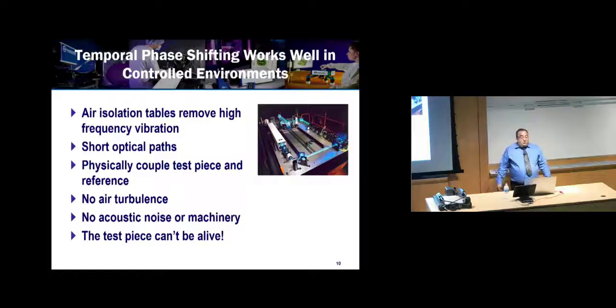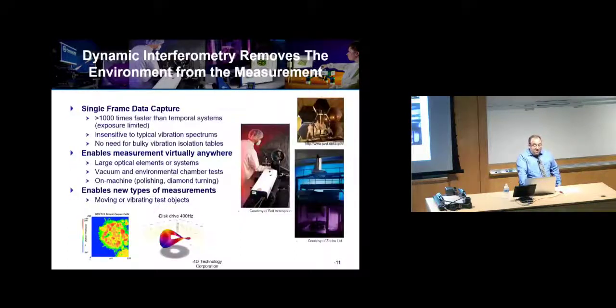That works excellently in controlled environments. You put things on an air isolation table, so your phase shift is the only thing making the fringes move. You shorten your optical path. You wrap everything with a lot of bubble wrap so there's no turbulence. Physically couple your test piece. Make sure everyone's quiet. Make sure your boss doesn't come in and lean on the table, which is probably the most common source of error. And if you need to measure something biological, you better kill it first, which might cause problems in certain situations. But you're going to get extremely precise data, sub-nanometer level data in a good environment.